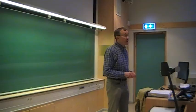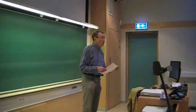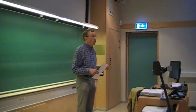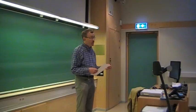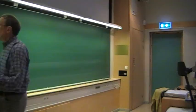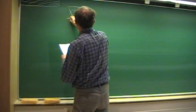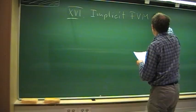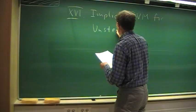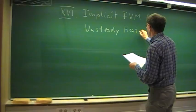Good morning and welcome to our next lecture on computational heat and fluid flow. We have now seen how to solve the steady Navier-Stokes equations and even include turbulence modeling using the Reynolds-averaged Navier-Stokes approach. Today we want to look at the solution of the unsteady Navier-Stokes equations using an implicit method — that is chapter 16, focusing on implicit finite volume methods for unsteady heat and fluid flow.